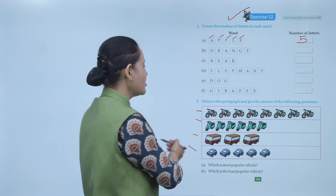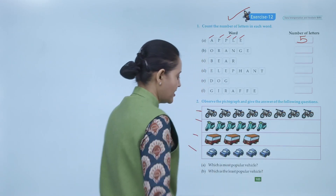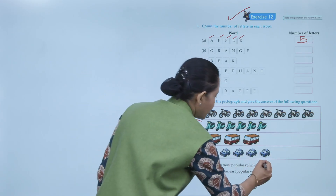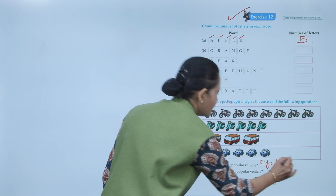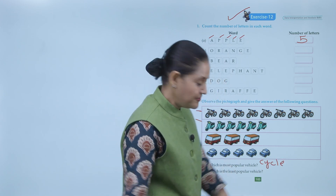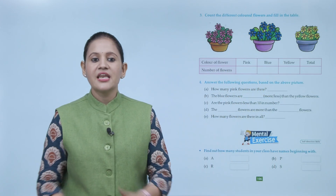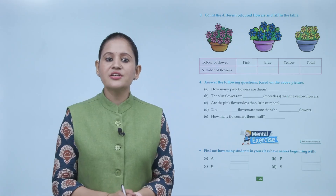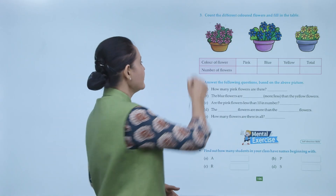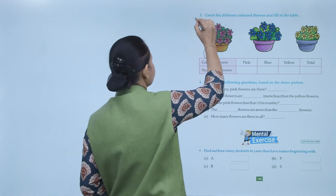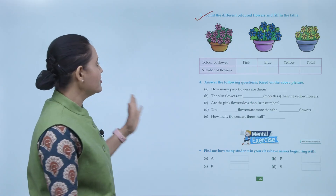Here you can see that the number of cycles is the highest, so cycle is the most popular vehicle. Next, count the different color flowers and fill in the table. Different colored flowers are given here.